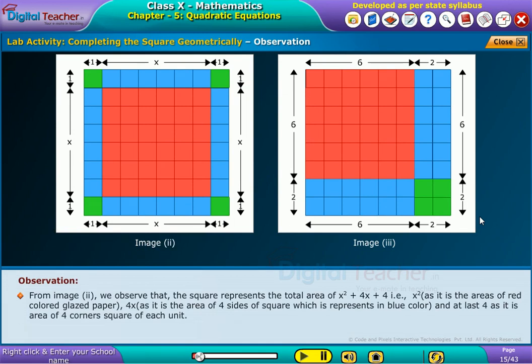Observation from image two: we observe that the square represents the total area of x² + 4x + 4. That is x² as it is the area of red colored glazed paper, 4x as it is the area of four sides of a square which is represented in blue color, and at last 4 as it is the area of four corners square of each unit.